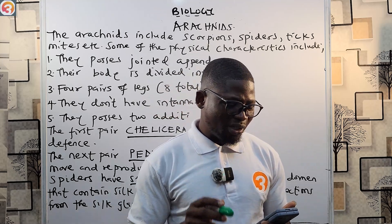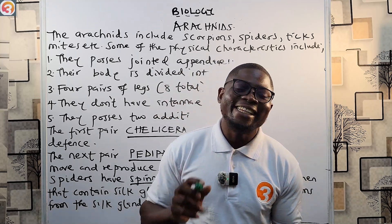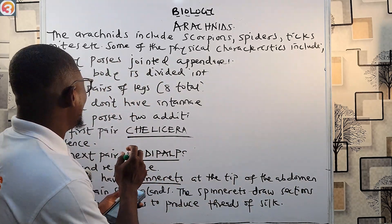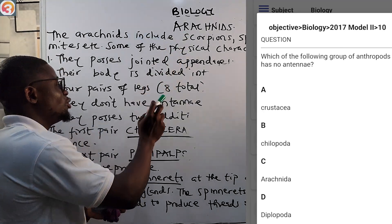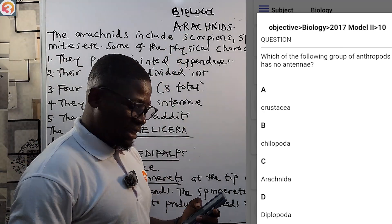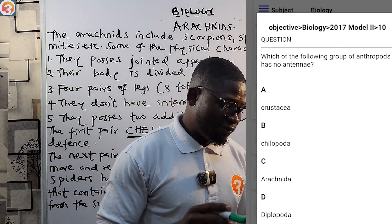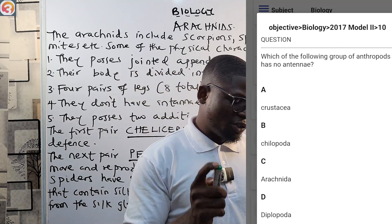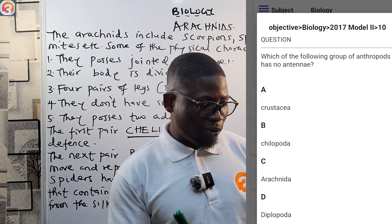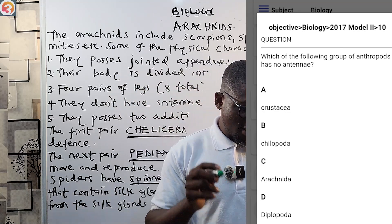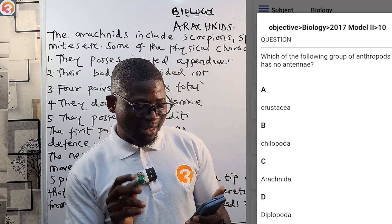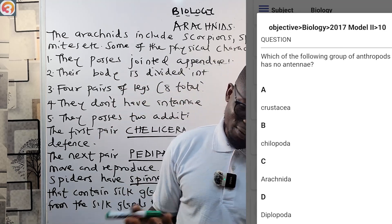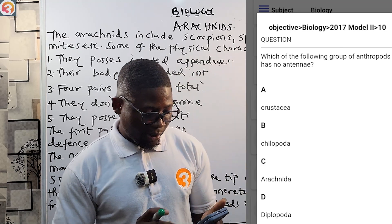A 2017 question asks: 'Which of the following groups of Arthropods has no antennae?' As I was stressing earlier, arachnids do not have antennae. The answer is C — Arachnida. No need to stress yourself on that one.